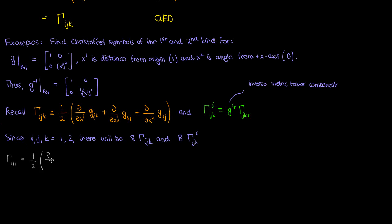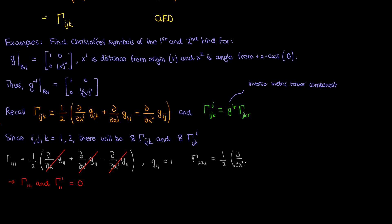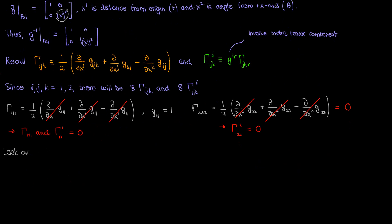Let's find each of those eight symbols. For gamma sub 1, 1, 1: the first kind symbol involves derivatives of the constant 1 — the (1,1) metric component — so those derivatives are zero, giving gamma sub 1, 1, 1 = 0. You can also show gamma super 1 sub 1, 1 = 0. For gamma sub 2, 2, 2: the (2,2) metric component is (x super 1) squared, but its partial with respect to x super 2 is zero, so gamma sub 2, 2, 2 = 0, and the corresponding second kind symbol is also 0.